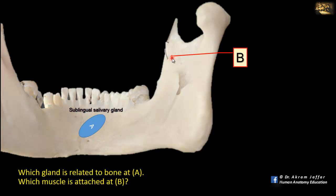Which muscle is attached here? This is part of the coronoid process of the mandible, and the muscle attached to the coronoid process is the temporalis muscle.